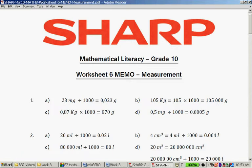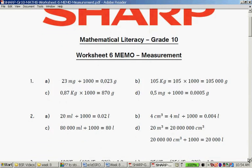80,000 milliliters divided by 1,000 gives me 8 liters. And then 20 cubic millimeters is equal to 20,000 cubic centimeters. No, I'm lying. This is actually 20 million. Sorry. 20 million cubic centimeters is equal to 20 million milliliters. So if I divide by 1,000, I get 20,000 liters.